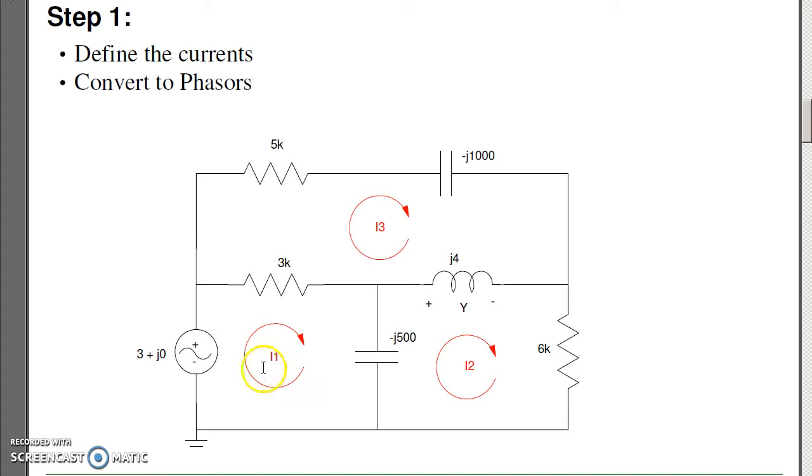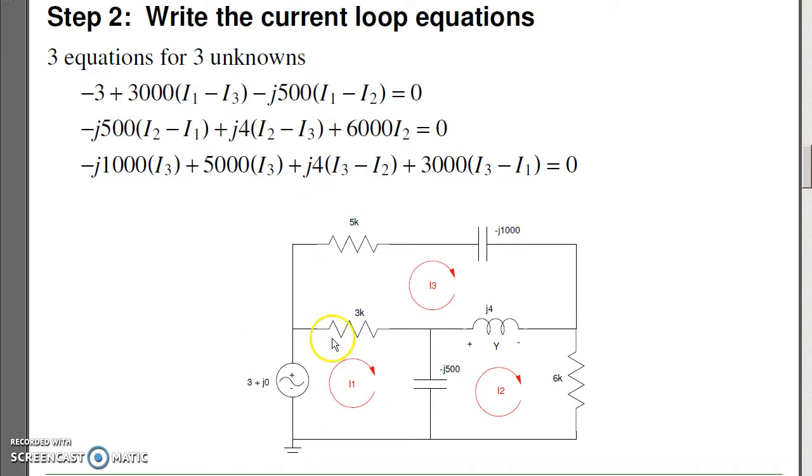I then define the current loops. Here arbitrarily I chose I1, I2, I3, all going clockwise. I can now write the loop equations. Around loop I1, I get -3 + 3000I1 - j500(I1 - I2) = 0. Around loop I2: -j500(I2 - I1) + j4I2 + 6000I2 = 0. And around loop I3: -j1000I3 + j4(I3 - I2) + 3000(I3 - I1) + 5000I3 = 0.